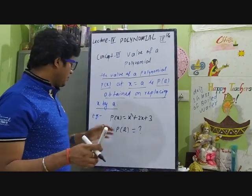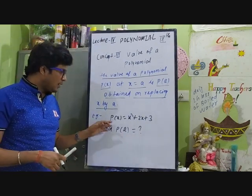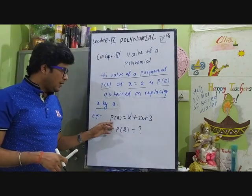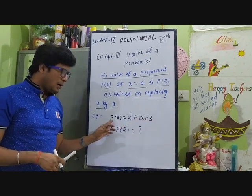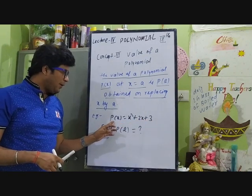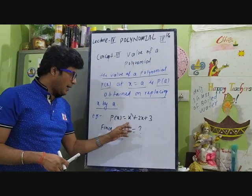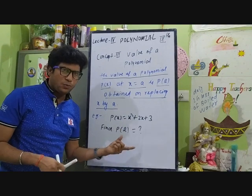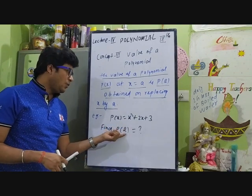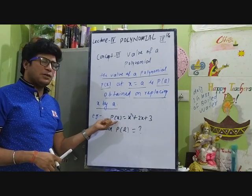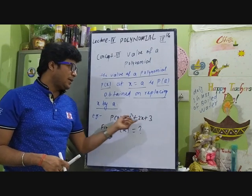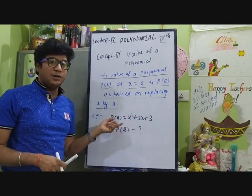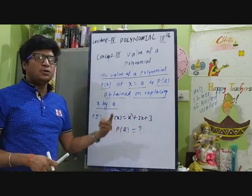Let's see the first example. Suppose we have a polynomial p(x) = x² + 2x + 3. The question is: find p(2). What is the value when x = 2?